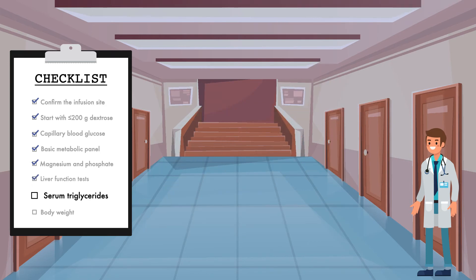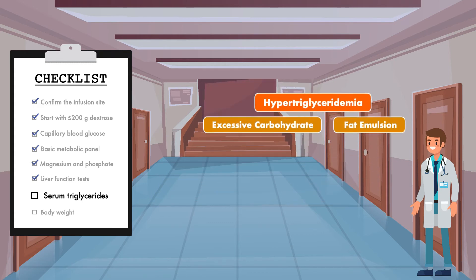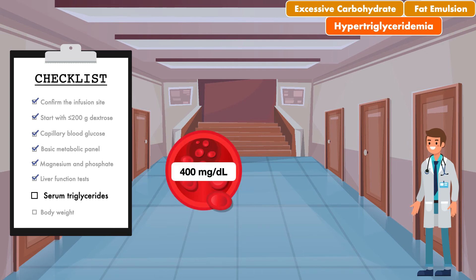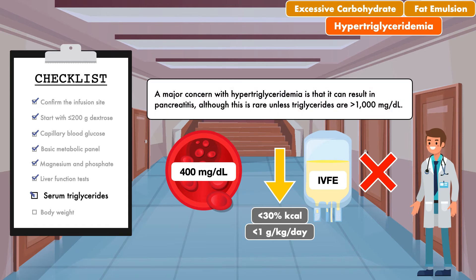That brings us to the seventh item on the checklist: obtain serum triglycerides. This is particularly important for patients who have a known history of hyperlipidemia, as they are considered to be at an increased risk for developing hypertriglyceridemia. This complication can occur from excessive carbohydrate intake or from the intravenous fat emulsion. The current recommendation from ASPEN is that when patients have a serum concentration greater than 400 mg per deciliter, the intravenous fat emulsion should be reduced or removed. For reduction, aiming for less than 30% of total calories from fat, or less than 1 gram per kg per day, is advised. A major concern with hypertriglyceridemia is that it can result in pancreatitis, although this is rare unless triglycerides are greater than 1,000.